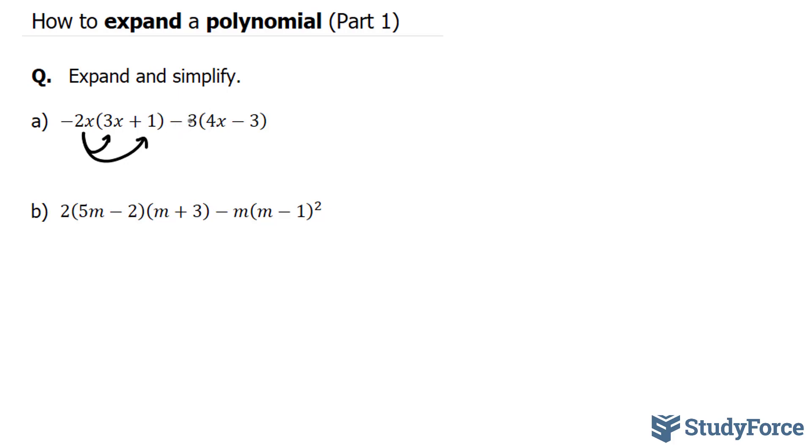Similarly, we have a negative 3 here. That's a monomial. We're going to multiply that to 4x and negative 3.